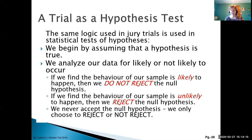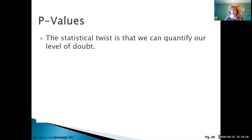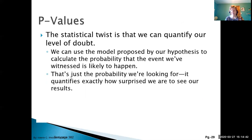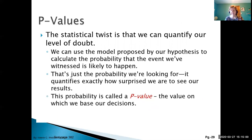We never truly accept the null hypothesis — we only choose to reject it or not reject it. Regarding p-values, we have to really understand what that means. The p-value is the probability that the event we've witnessed is likely to happen. It's the probability of our sample statistic actually occurring. In our process, we calculated the z-statistic and then calculated the p-value for that z to see how surprised we are to see those results. If the p-value is very small, it indicates that the probability of that thing happening is very small — it shouldn't have happened but it did — and that supports rejecting the null hypothesis.